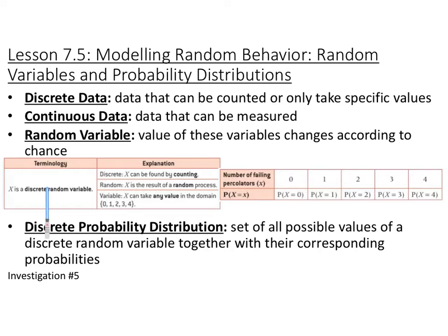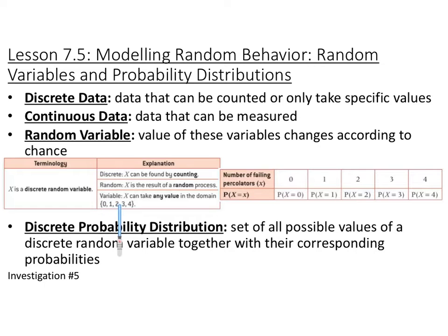So if you have x as a discrete random variable, it means it's discrete, so x can be found by counting. It's random, so x is the result of a random process. And it's a variable, so it can only take any value in the domain — for this example, the domain is 0, 1, 2, 3, or 4.